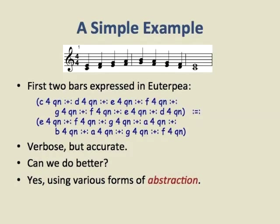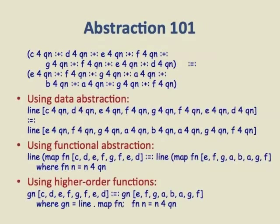Then we take all of those notes and play them in parallel — that's what this constructor does — with the analogous thing starting at E: E, F, G, A, B, A, G, F. I'm only doing the first four bars for simplicity. It's very simple and verbose, but accurate. The question is, can we do better? This is an example to show where the pedagogy comes in — we can use simple musical examples rather than Fibonacci sequences or factorial to demonstrate abstraction.